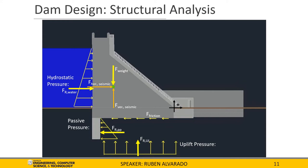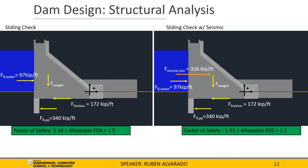In this section, we take a closer look at what forces will cause the structure to potentially slide. The resulting water force causes a 97 kips per foot push to the right. However, the friction force and resultant passive pressure gives us a combined resisting force of 512 kips per foot, giving us a 5.24 factor of safety. Introducing the impact of an earthquake, the horizontal seismic force adds another 316 kips per foot to the right. Although the pushing force increased, the resisting force of 512 kips per foot is sufficient to give us a 1.51 factor of safety. Both cases satisfy the allowable factor of safety for the respective case.